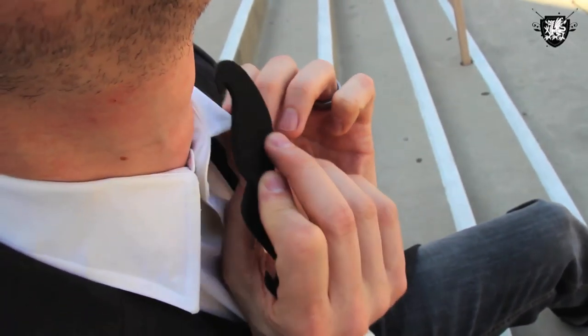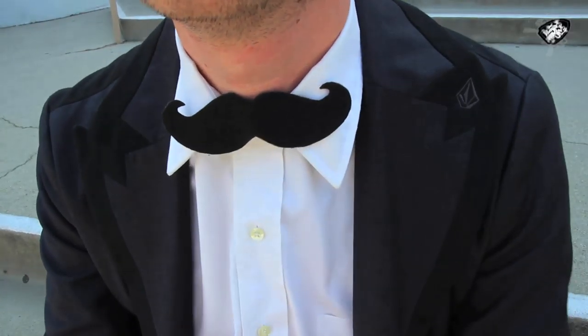To attach, you just simply clip it onto both sides of your collar and bam, the mustache bowtie.